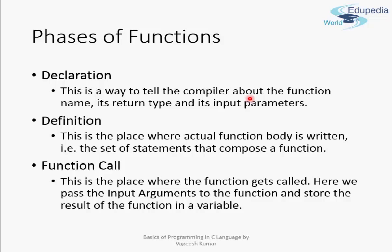If you have not declared your function, the compiler will not find it unless it is defined before the current line. The definition of a function is where the actual body is written — the set of statements that comprise the function. The function call is the place where you actually call the function, pass input arguments, and store the result. There can be multiple calls to the same function throughout your code.